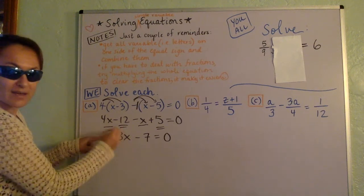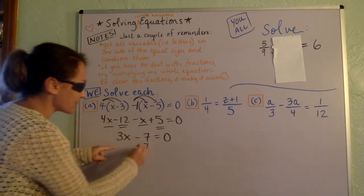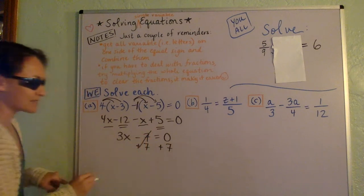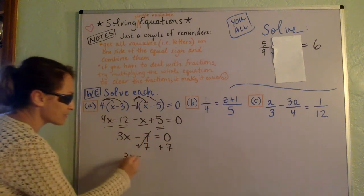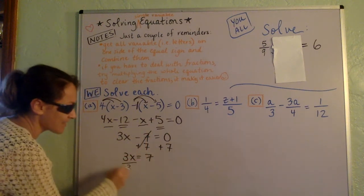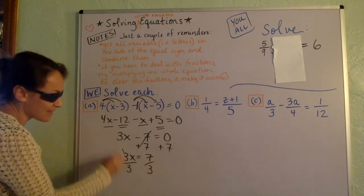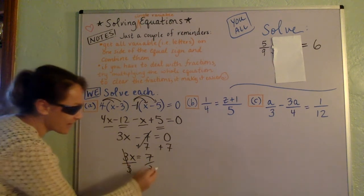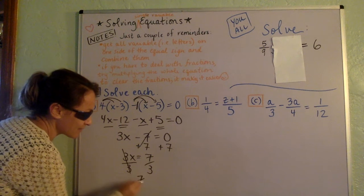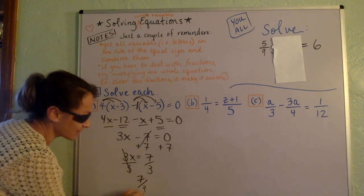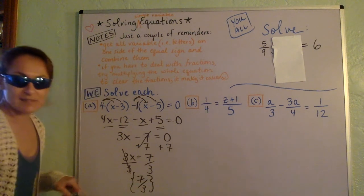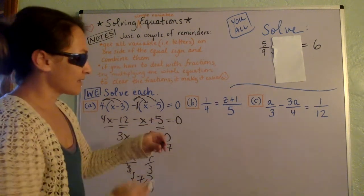Then we want to isolate the variable term. So that means I'm going to move the 7 over there. So that's 3x equals 7. Last step. We want to isolate the variable. So I'll divide and we end up with 7 thirds. Final answer. 7 thirds. Let's take a look at this one.